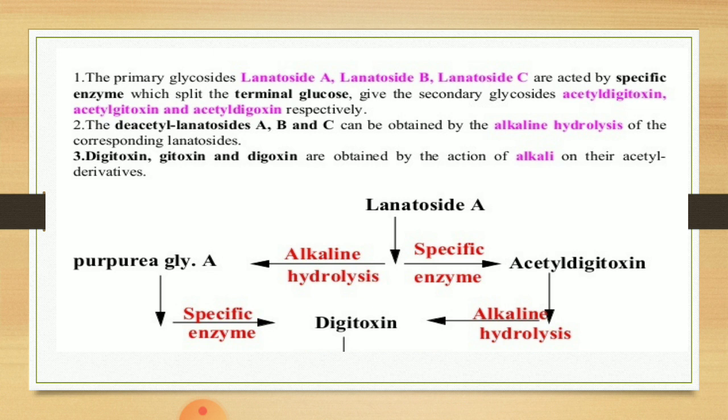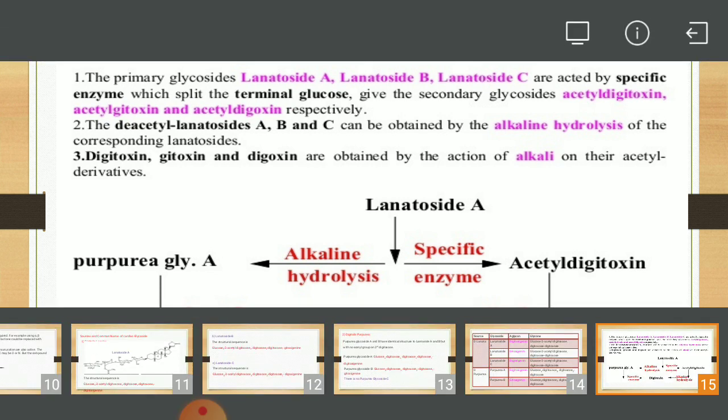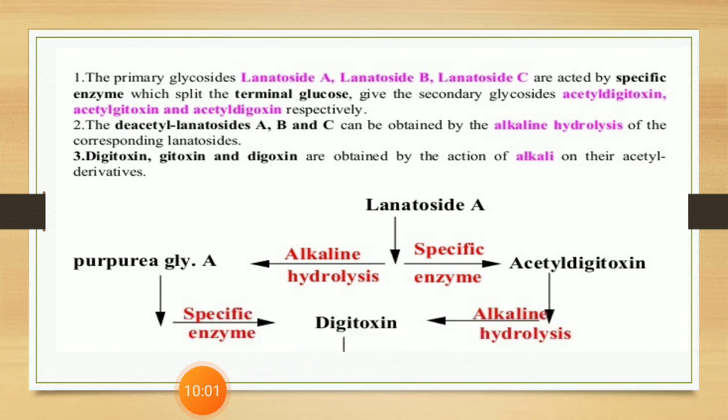Second point: deacetyl-lanatosides A, B, and C can be obtained by alkaline hydrolysis of the corresponding lanatoside. After alkaline hydrolysis, the lanatoside glycosides give deacetyl-lanatosides — that is, the acetyl group is removed. So lanatoside A after alkaline hydrolysis forms purpureaglycoside A. Similarly, lanatoside B after alkaline hydrolysis forms purpureaglycoside B.